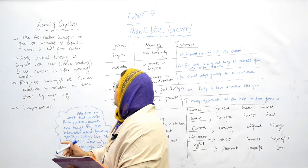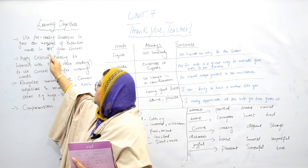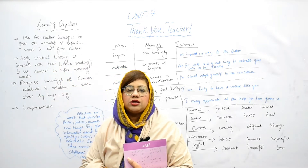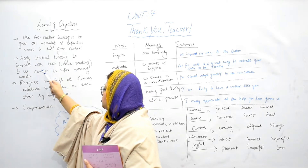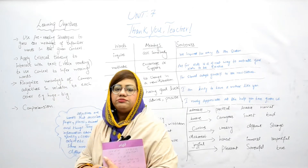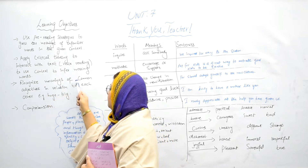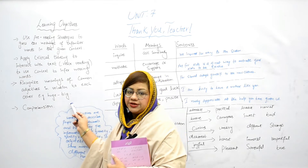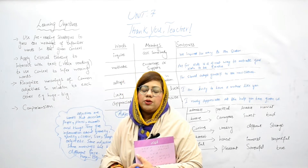The learning objectives are: use pre-reading strategies to guess the meanings of unfamiliar words in the given context; apply critical thinking to interact with text while reading, and use context to infer missing words; recognize meanings of common adjectives in relation to each other — for example, huge and big. And lastly, we will discuss comprehension.